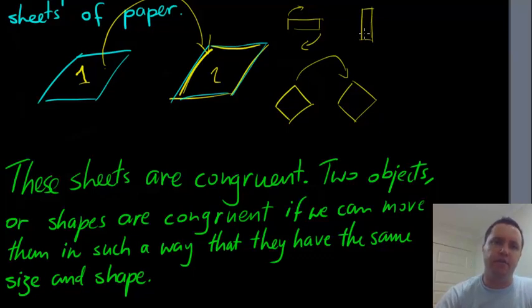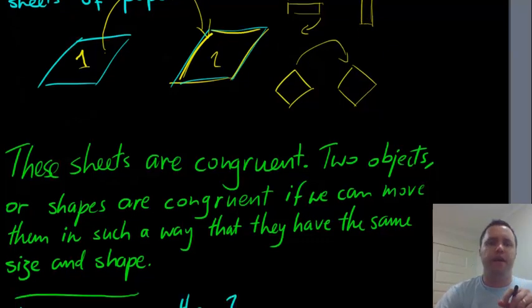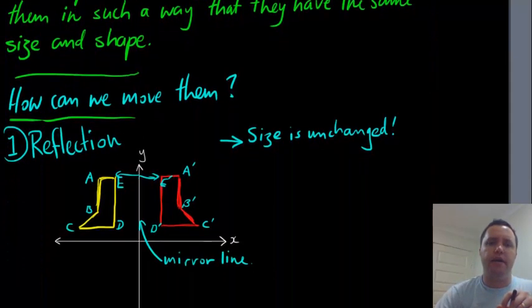That's what congruence is about. You need to be able to, so if you could rotate one to make it look like the other or some of the other transformations we're going to see, then there's no issues. But there are some rules to it, and we're going to cover them today or in this video.